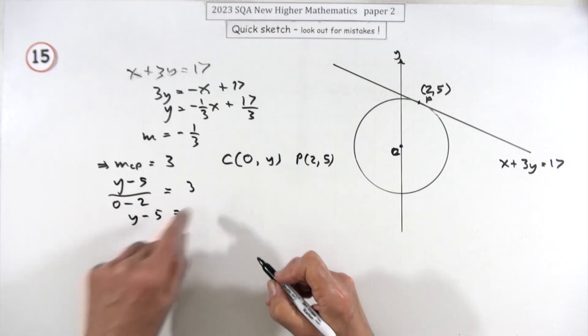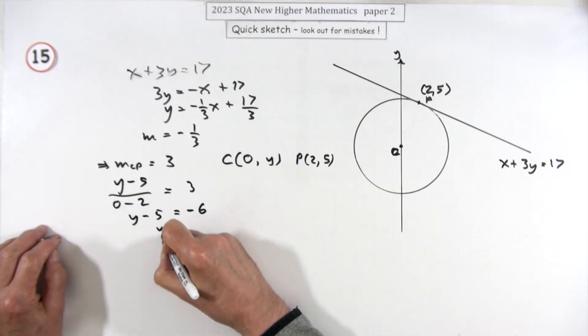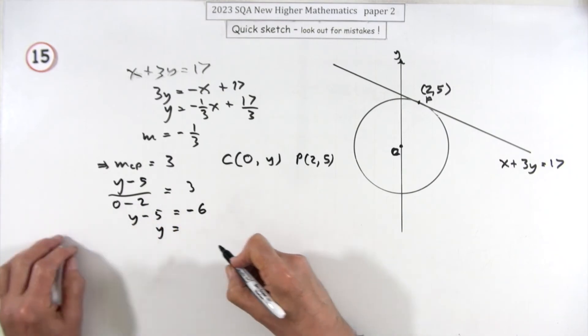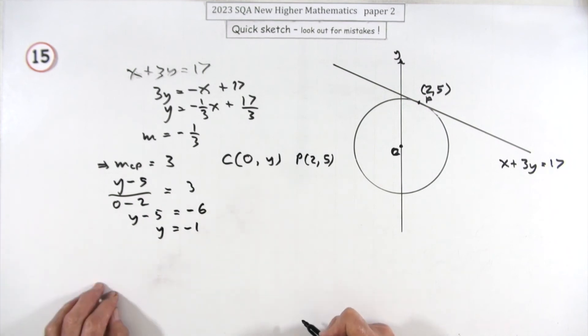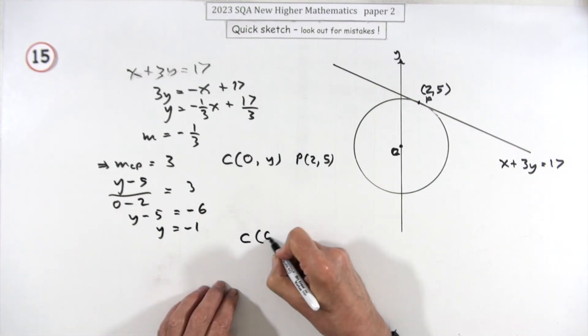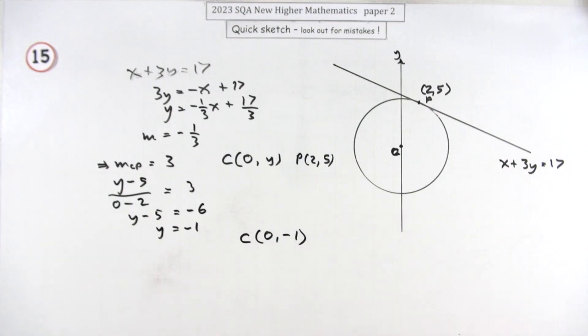Take the negative two across and multiply, you've got negative six. Now take the five across and add, and you've got negative one. So the center is the point zero negative one.